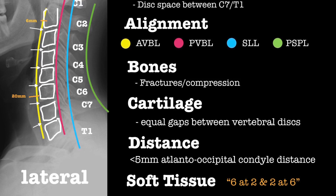S is for soft tissue. Look at the retropharyngeal or retrotracheal space. Remember: 6 at 2 and 22 at 6 — that is, 6mm at C2 and 20mm at C6. If there's an abnormal measurement, think of soft tissue swelling, which could be from an obvious or occult fracture, hematoma, or abscess.